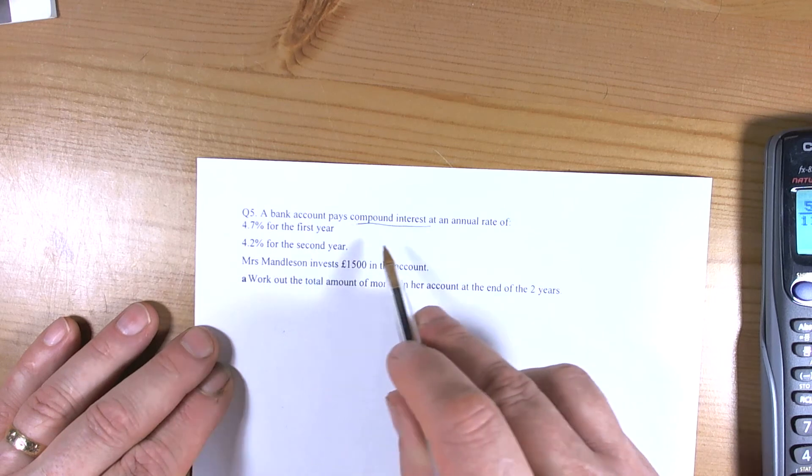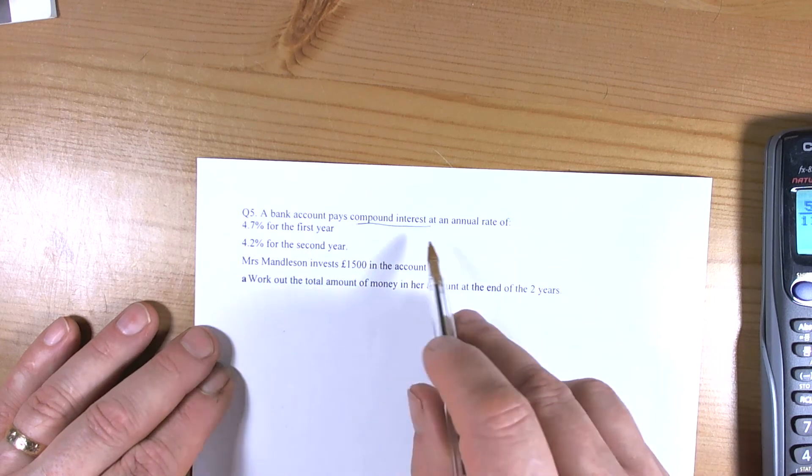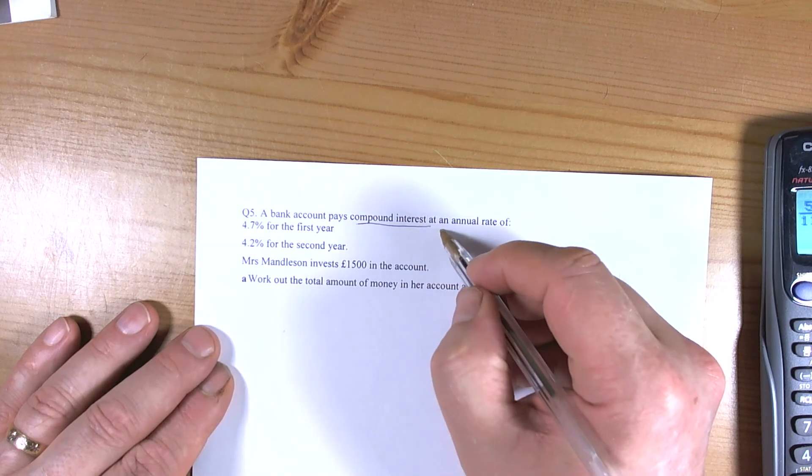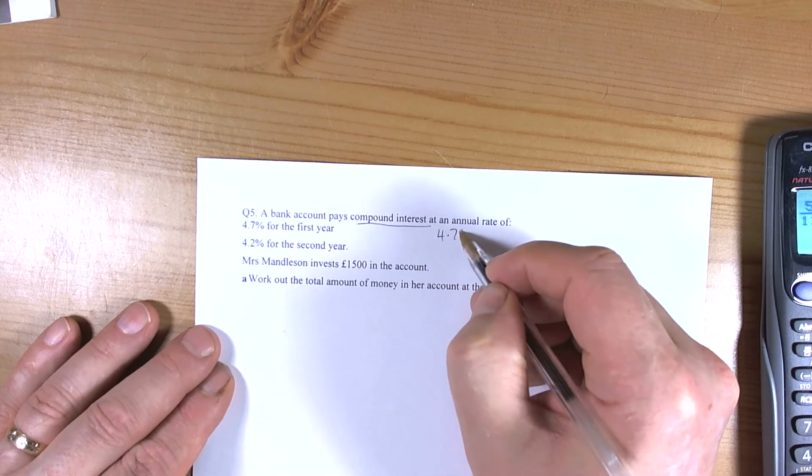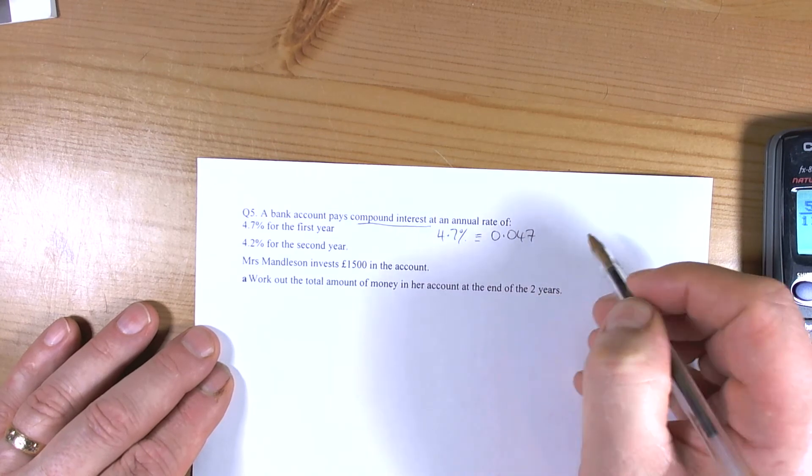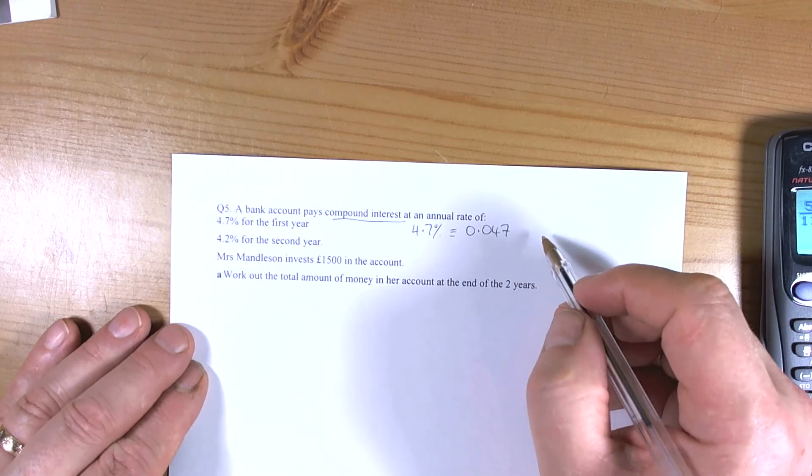Because each year is increased by something and we have an original 100%. So we've got 4.7%. So 4.7% is equivalent to 0.047 as a decimal. But because we're talking about a percentage multiplier.